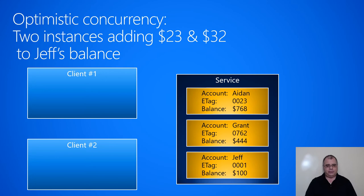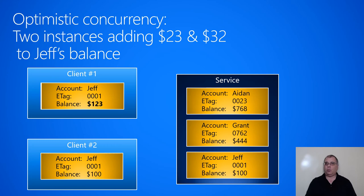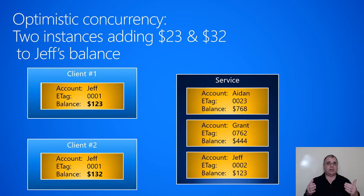Both clients go to the service and get the current version of the Jeff account — version one, balance $100. Both clients add their amounts: client one adds $23 making it $123, client two adds $32 making it $132. When client one writes back to the service, it says it has version one and has modified it to $123. The service confirms it's also at version one — that's a match — so the change is accepted. The service accepts $123 and increments the eTag from one to two.